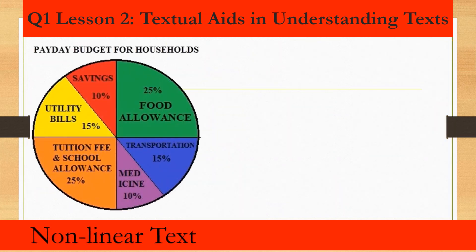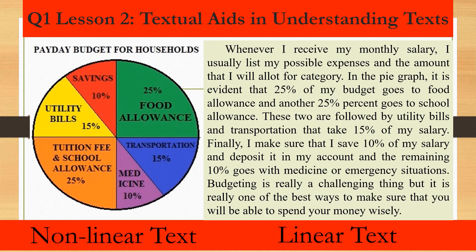For example, this pie graph, which is a nonlinear text, shows one's payday budget. I transcode it to linear text by interpreting it and writing a paragraph relevant to the graph: 'Whenever I receive my monthly salary, I usually list my possible expenses and the amount that I will allot for each category. In the pie graph, it is evident that 25% of my budget goes to food allowance and another 25% goes to school allowance. These two are followed by utility bills and transportation, which take 15% of my salary. Finally, I make sure that I save 10% of my salary and deposit it in my account, and the remaining 10% goes to medicine or emergency situations.' Budgeting is really a challenging thing, but it is one of the best ways to make sure that you will be able to spend your money wisely.